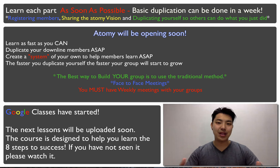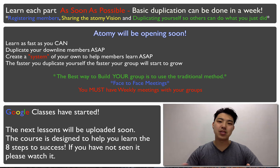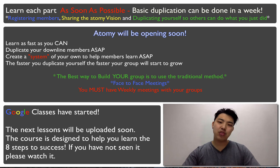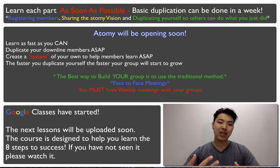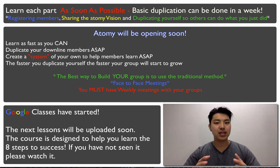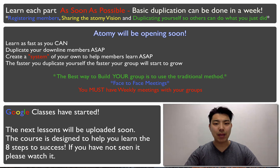Don't wait until you learn everything — take it in little pieces. For the registration process, you're learning how to register people, and as you learn, you're going to navigate through the Admi.kr website and learn how to build your A-line and your B-line. As you do that, you want to duplicate your downline members as fast as you can.